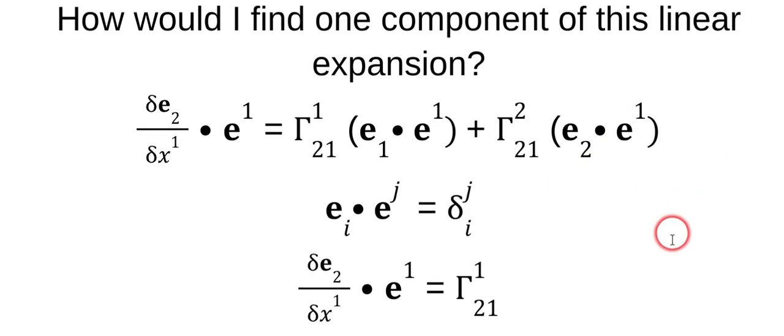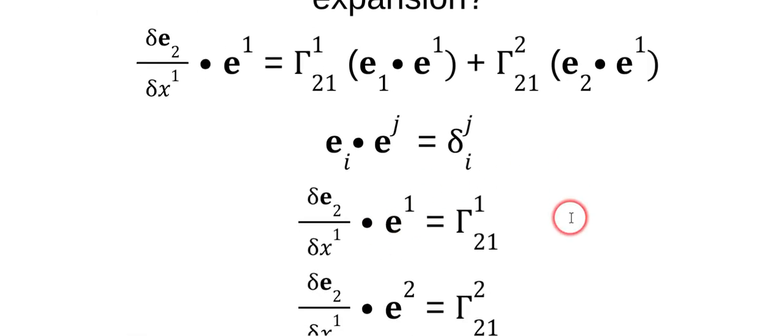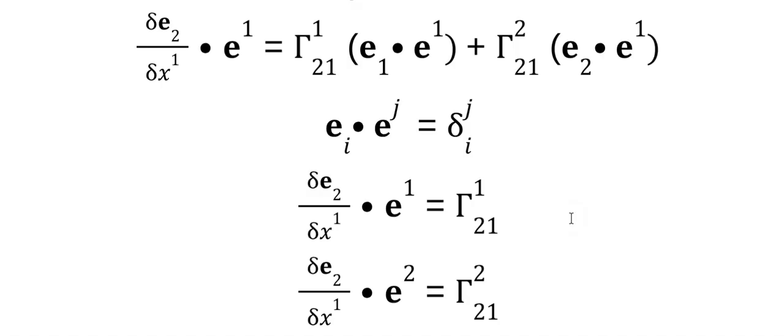So this is equal to 1, and that's equal to 0. So we get this. So we found this one component by dotting this vector with another basis vector. And likewise, we can do the same thing here. If we dot it with e_2 in the covariant position, then we get this component.